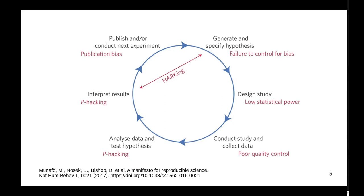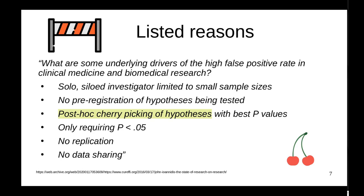Then there is poor quality control while conducting the study and collecting data — for example, a machine not being calibrated. There is also p-hacking, which means repeating experiments until your hypothesis is proven right. Related to this is HARKing — hypothesizing after the results are known. And there is publication bias: you don't publish everything, just what looks good, which is partly a consequence of how journals decide what to publish.